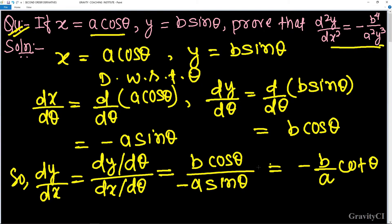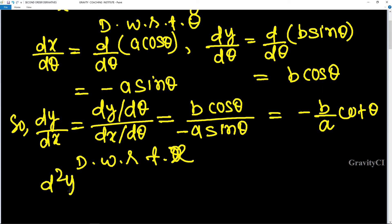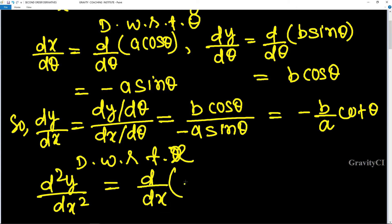Now again differentiate with respect to x. Then d²y/dx² equals d/dx of minus b upon a · cot θ.